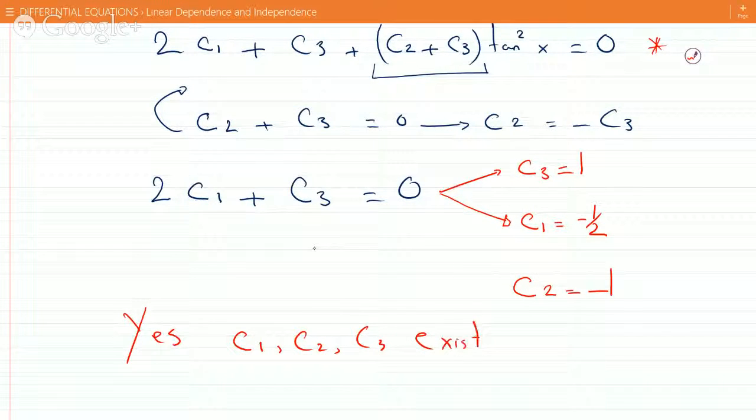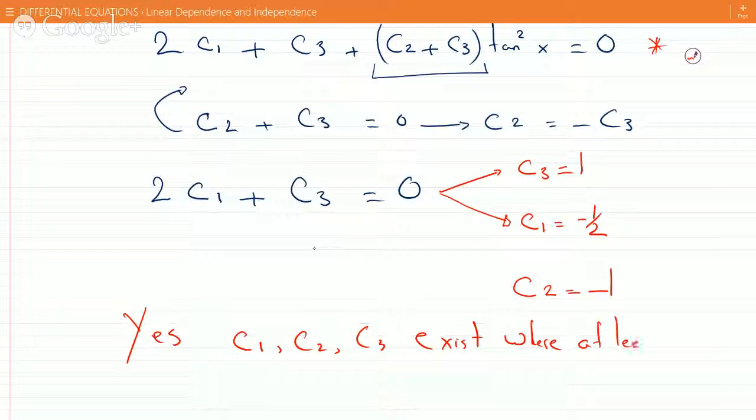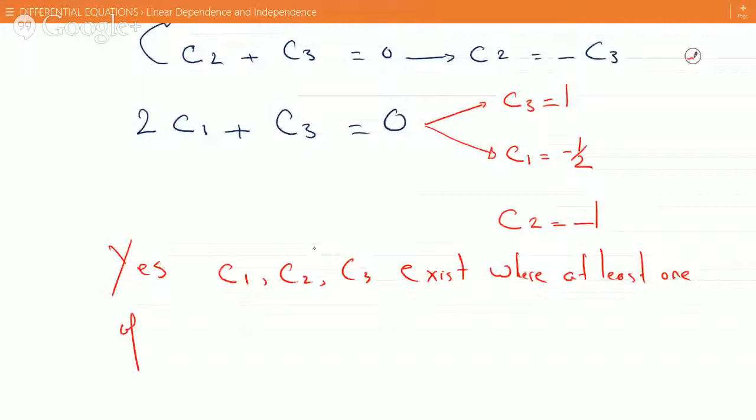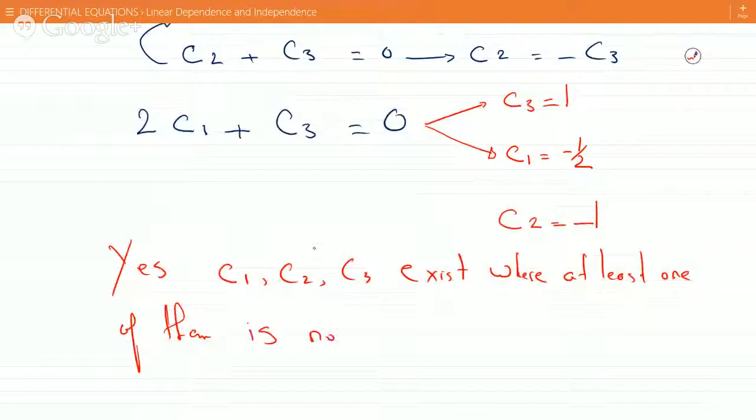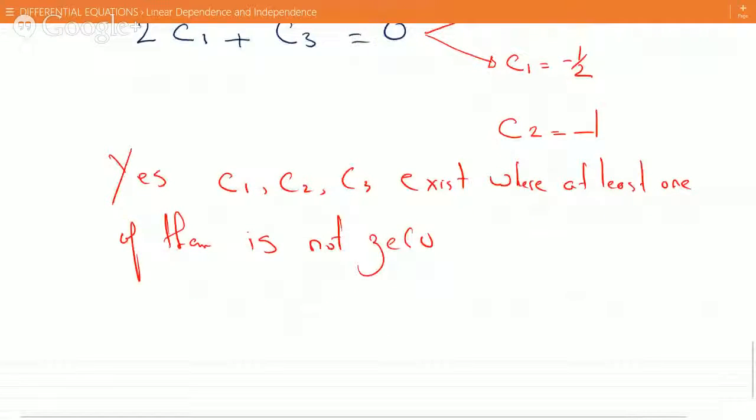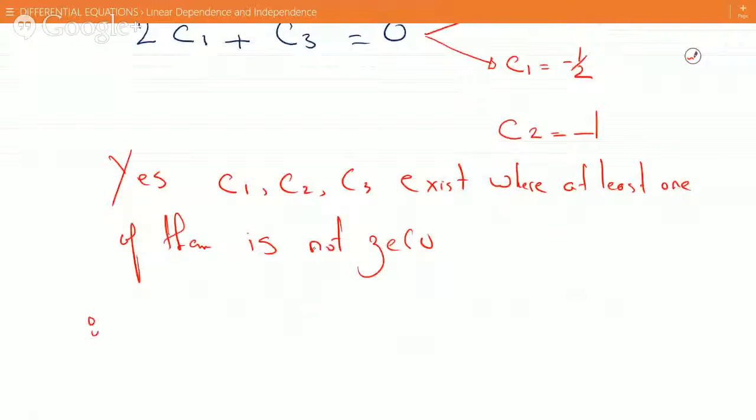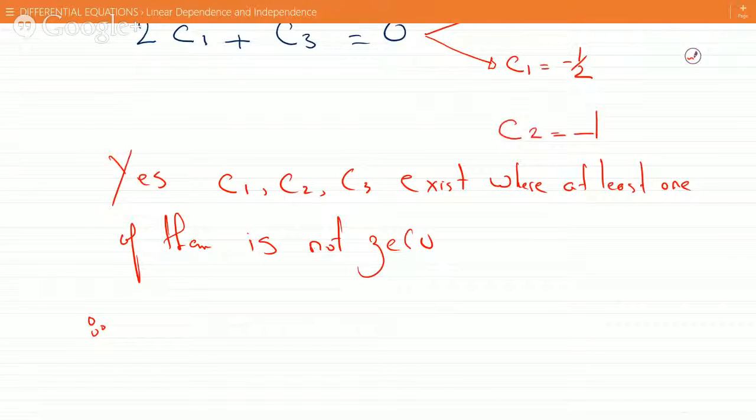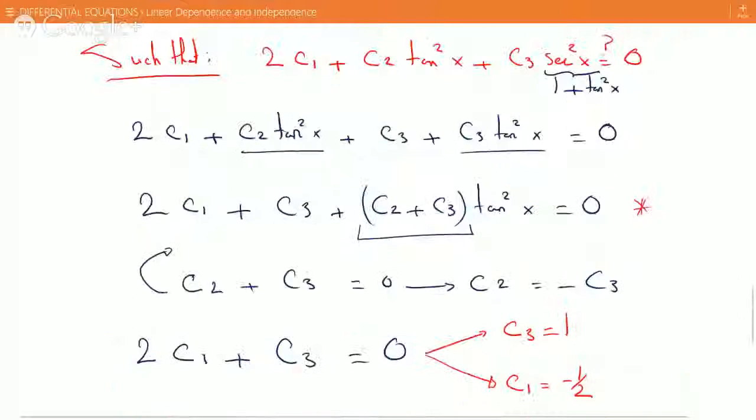Therefore yes, C1, C2, C3 exist where at least one of them is not zero. They don't all have to be non-zero, at least one of them, but I found all of them to be non-zero.